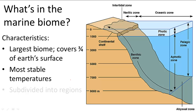The marine biome is also subdivided into different regions based on factors like the presence of sunlight, the distance from land, and water depth. Each region is inhabited by a different variety of species depending on the characteristics of that zone.